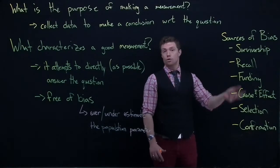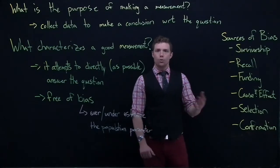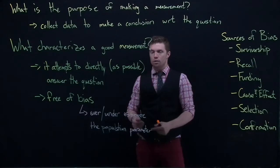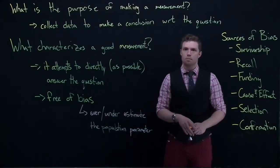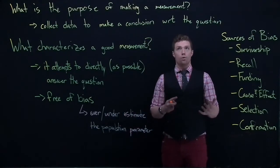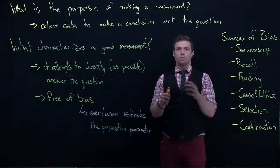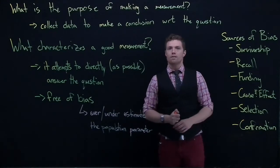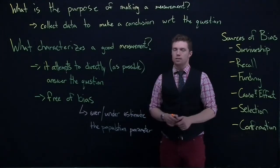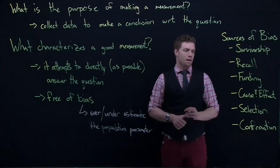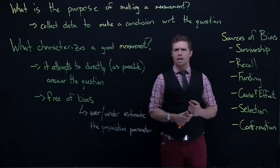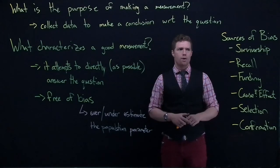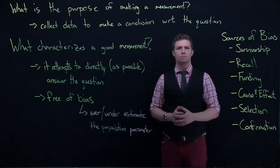Anyhow, there's a ton of sources of bias and ultimately what we are trying to do is we're trying to stay free of bias so that we are not over or underestimating the population parameter. Because ultimately, when we're making this measurement, we're trying to reveal the truth. And these are things that are confounding the truth or over or underestimating some population parameter. Anyhow, so those are some of these ideas of why we are making measurement, what makes a good measurement, and what makes a good measurement.